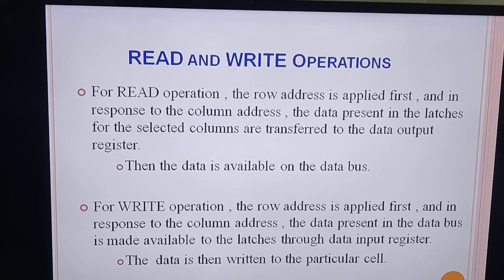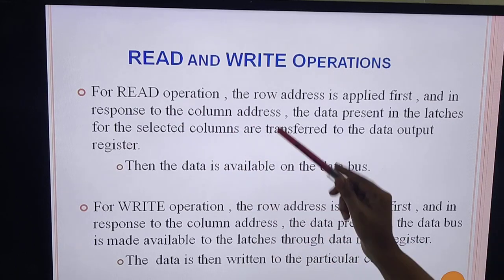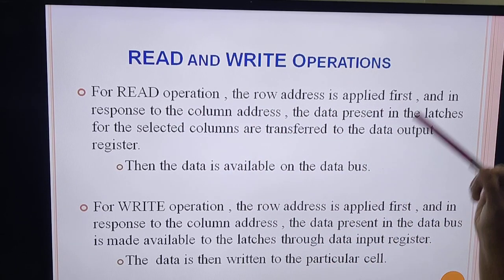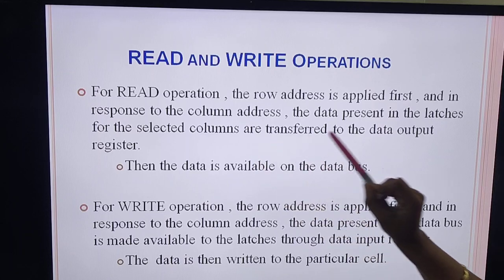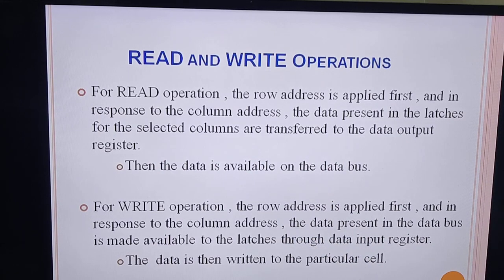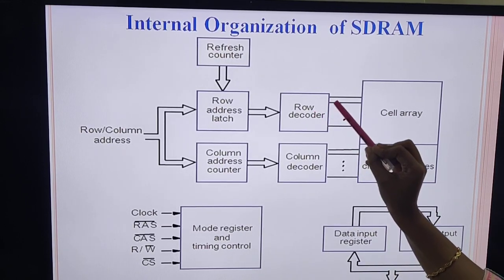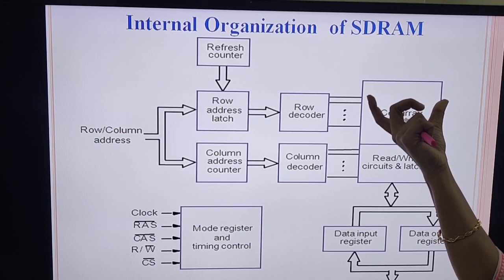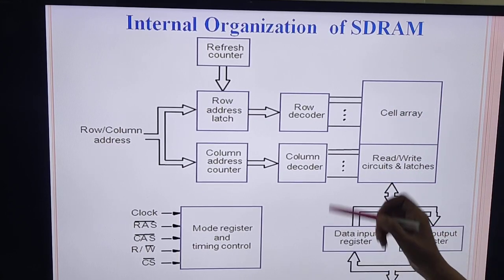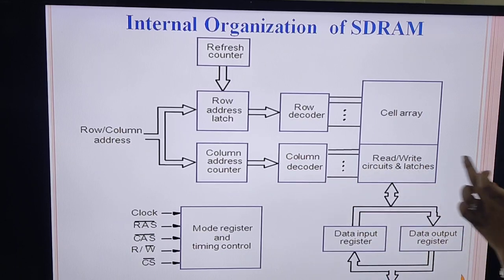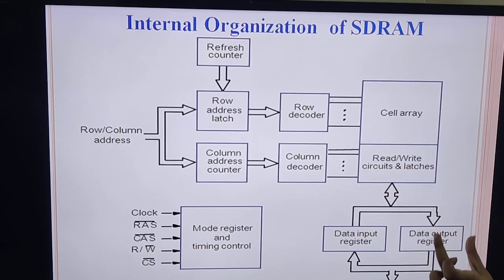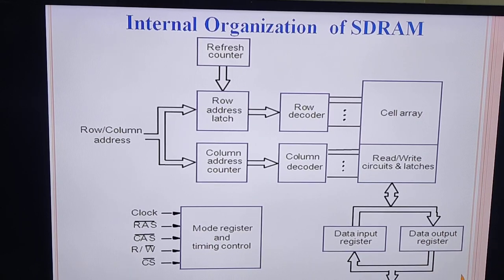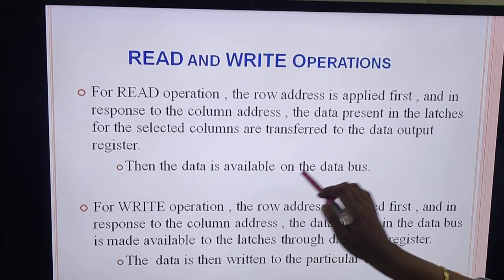For the read operation, the row address is applied first. In response to the column address, data present in the latches for the selected column is transferred to the data output register. The row is selected and all information in that row is stored in the latch. Then one particular column is selected, that data is given to the data output register, and the data output register places the data onto the data bus. That is the read operation.